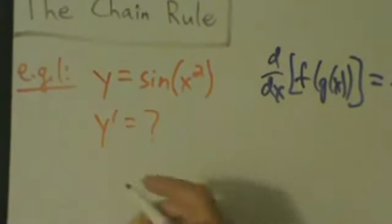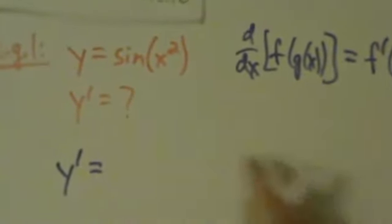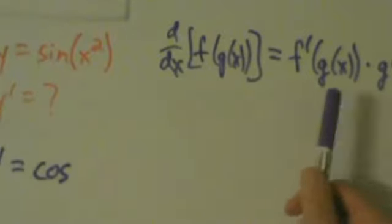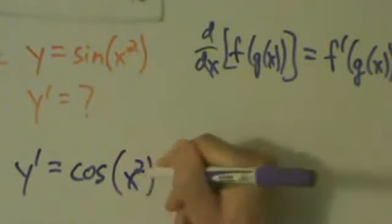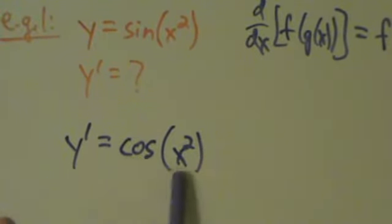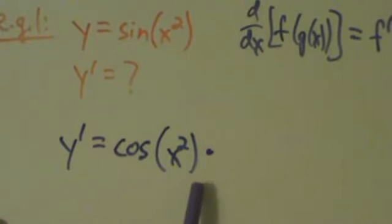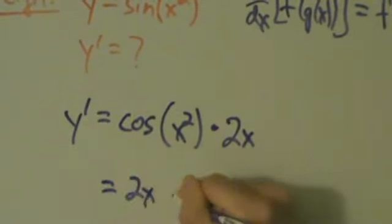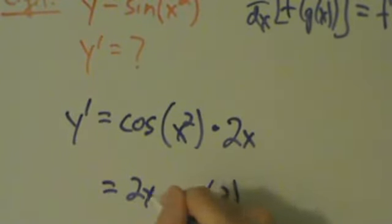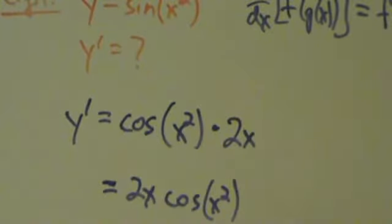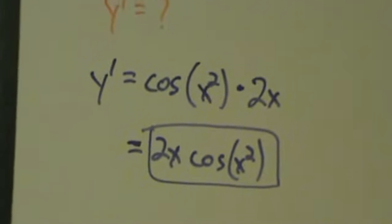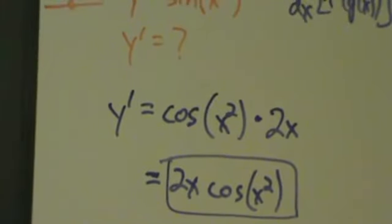The chain rule says: take the derivative of the big guy — the derivative of sine is cosine — evaluated at the little guy, which is x squared. Then multiply by the derivative of the little guy: x squared gives 2x. So y prime equals cosine of x squared times 2x, which is the same answer as before. For the rest of the examples we'll use this second method, because as the functions get more complicated, the first way becomes impractical.